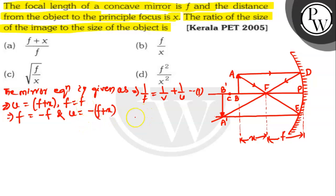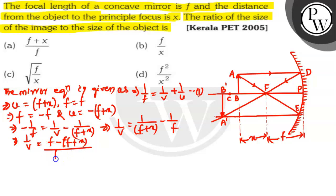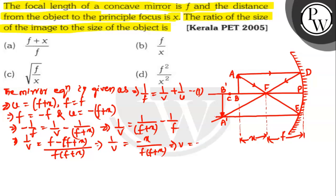Substituting these in the mirror equation 1, we get: −1/f = 1/v − 1/(f + x). Rearranging, 1/v = 1/(f + x) − 1/f. Taking LCM, that implies 1/v = −x / [f(f + x)]. Taking the reciprocal, v = −f(f + x) / x.